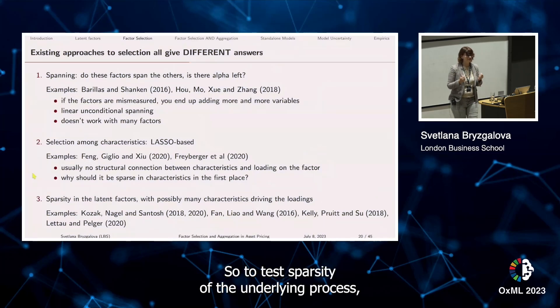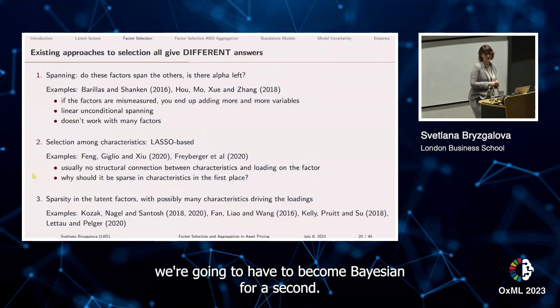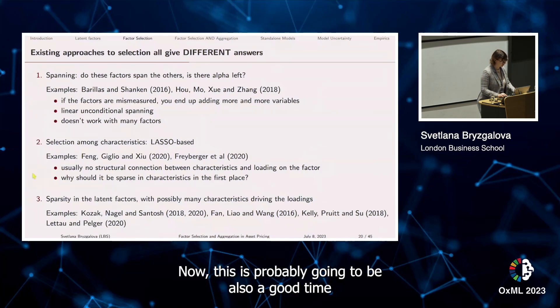So to test sparsity of the underlying process, we're going to have to become Bayesian for a second.